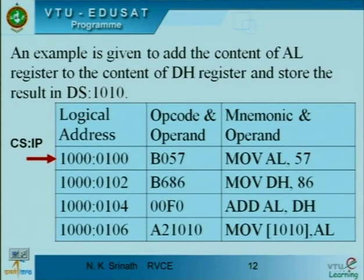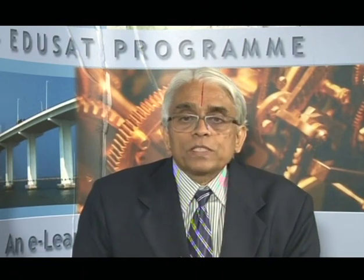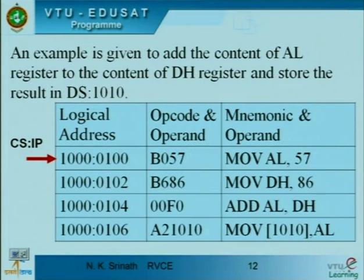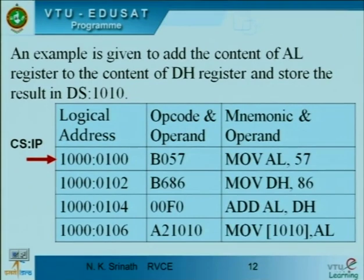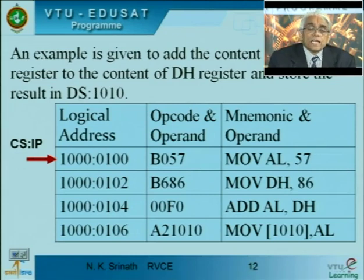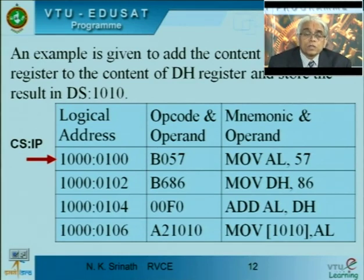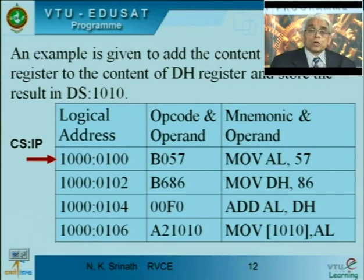A simple example: add the content of AL register to the content of DH register and store the result into memory location DS:1010. This program is shown with logical addresses, opcodes, and mnemonics to help understand how data is stored and what happens when the processor executes. We have CS:IP pointing to the first logical address where the program is to be executed. The program is small, having only 6-8 bytes, and the result is stored in memory location DS:1010.